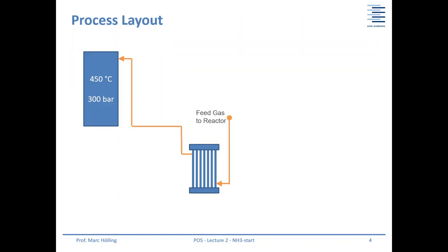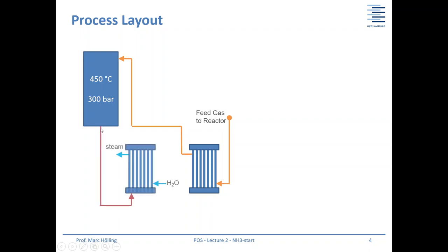Now the process layout — I did a lot of PowerPoint animations. We start with the feed gas to the reactor, but we don't feed it directly; there's a preheating step before entering. There's also a lot of heat exchange inside the reactor, which we'll cover in a later lecture. The feed gas has a high amount of hydrogen and nitrogen, sent to the reactor at high pressure and high temperature, where ammonia is produced. After internal heat exchange the temperature is about 300 degrees Celsius.